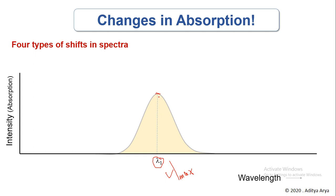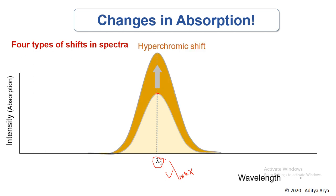There are four different types of shifts that can be expected in a spectrum in either direction. They may be an increase or decrease in the intensity of light absorbed, or there may be a change in the lambda max to a higher or lower wavelength. The first type of change is when the intensity of absorption increases — this is called a hyperchromic shift. In a hyperchromic shift, the lambda max remains the same, meaning it is still absorbing the same wavelength to the highest extent as before.